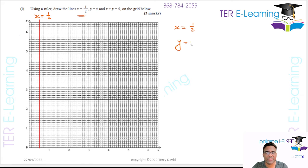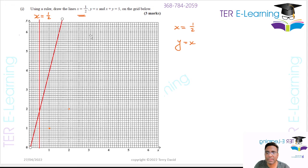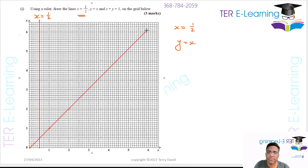The next line they want us to draw is y is equal to x. The line y equals x means every point on that line has the exact same x and y value. So (0,0) is a point, (1,1) is a point, (2,2) is a point, and so on. The line y equals x passes through the origin. That is the line y equals x.